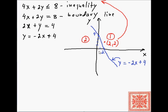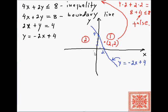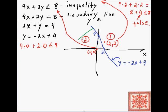We take one point on one side of the line — in the first half plane — and check if it satisfies the inequality. Testing (2, 2): 4×2 + 2×2 = 8 + 4 = 12, which is not less than or equal to 8, so that half plane does not satisfy it. Testing (0, 0): 4×0 + 2×0 = 0 ≤ 8, so the second half plane does satisfy the inequality.